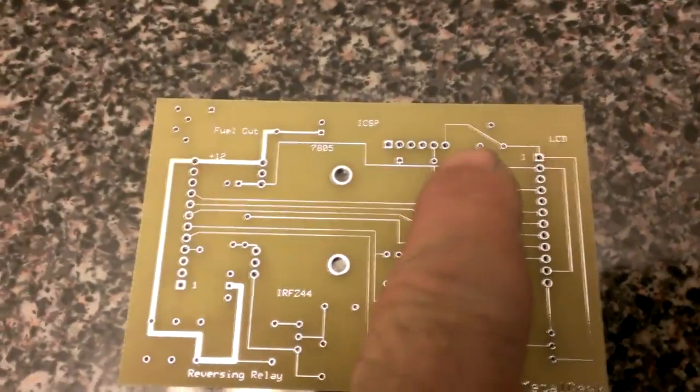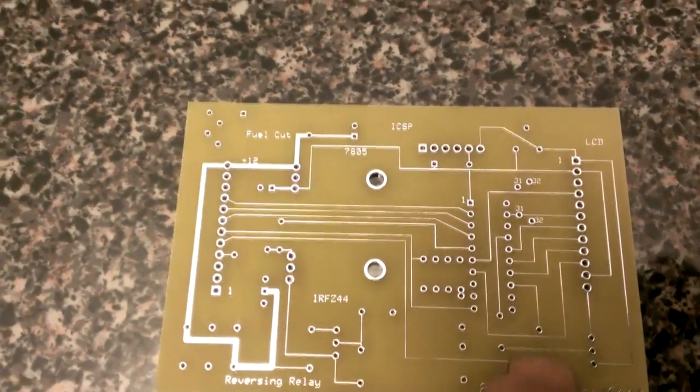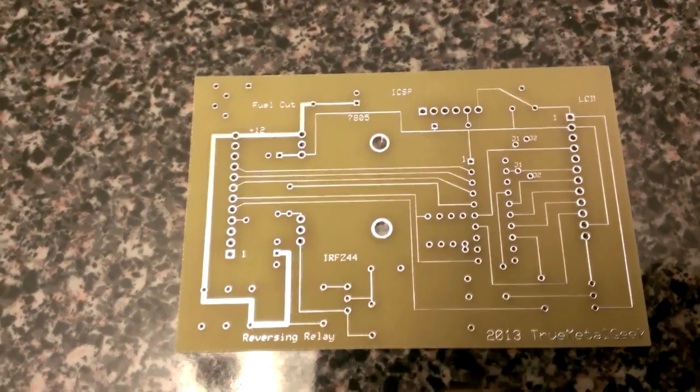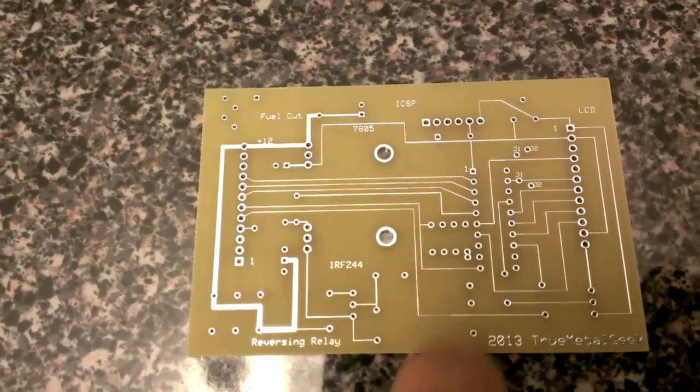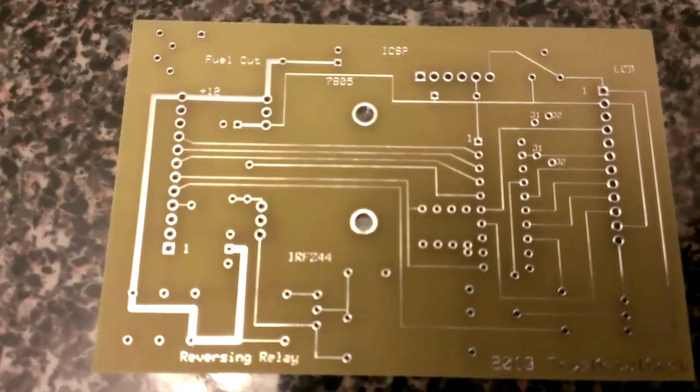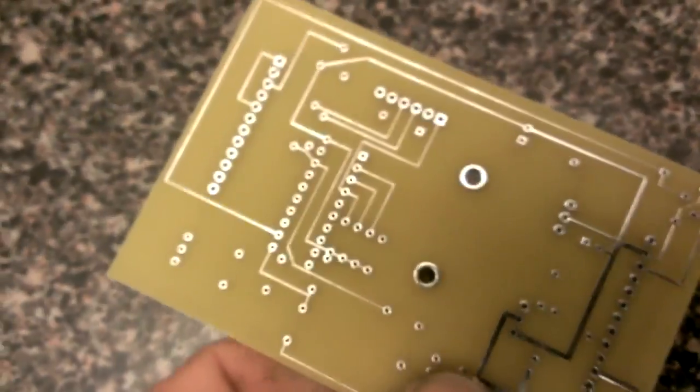Pot there. No, pot's up there. This is just a pull up resistor. Pull up resistor. Or pull down resistors actually. Resistor divider network. Pretty cool. Pretty good quality.